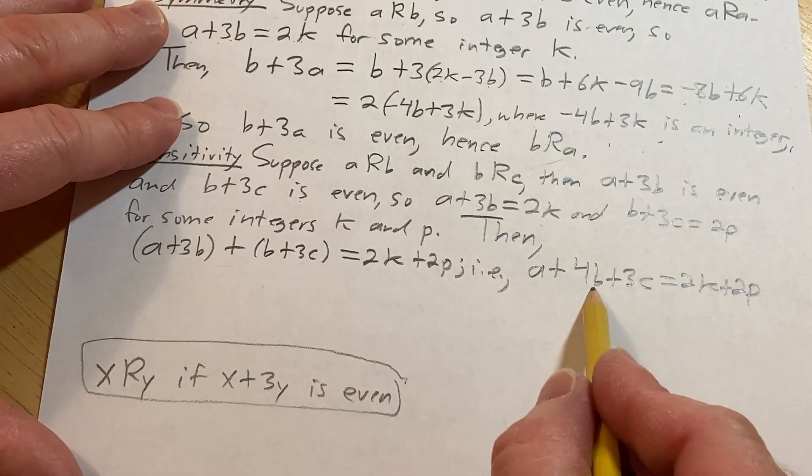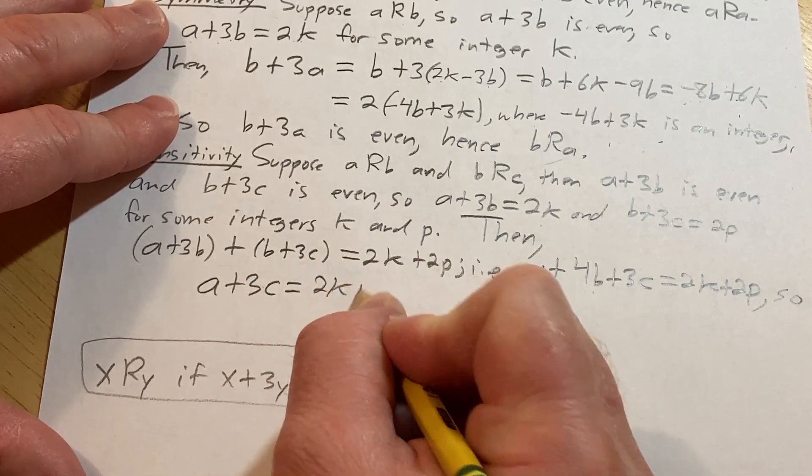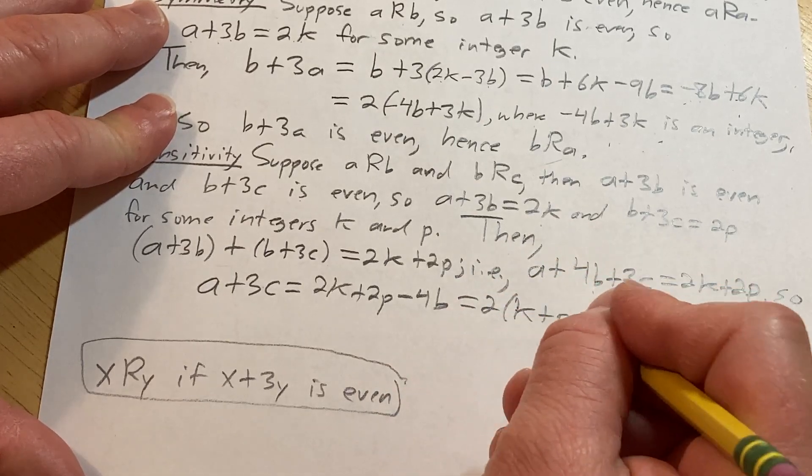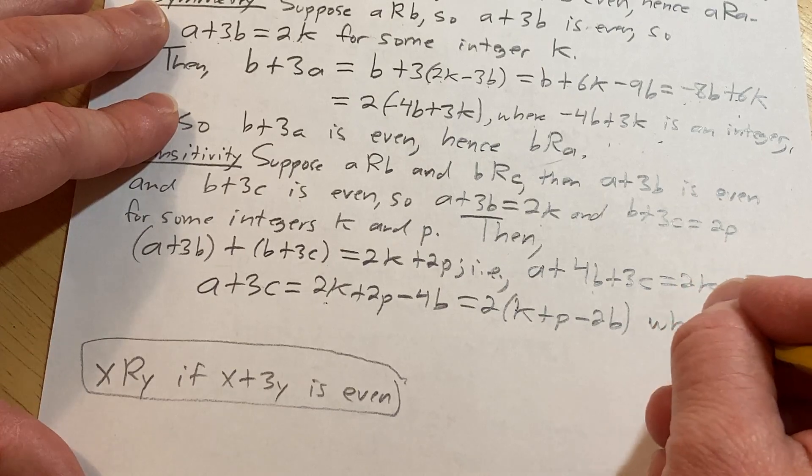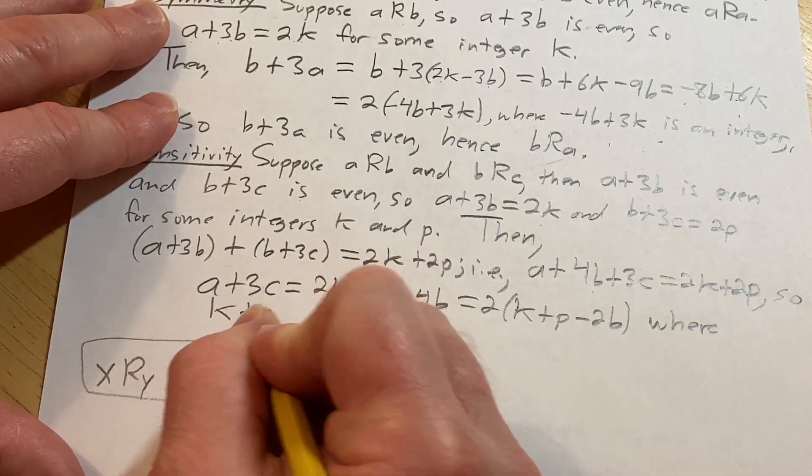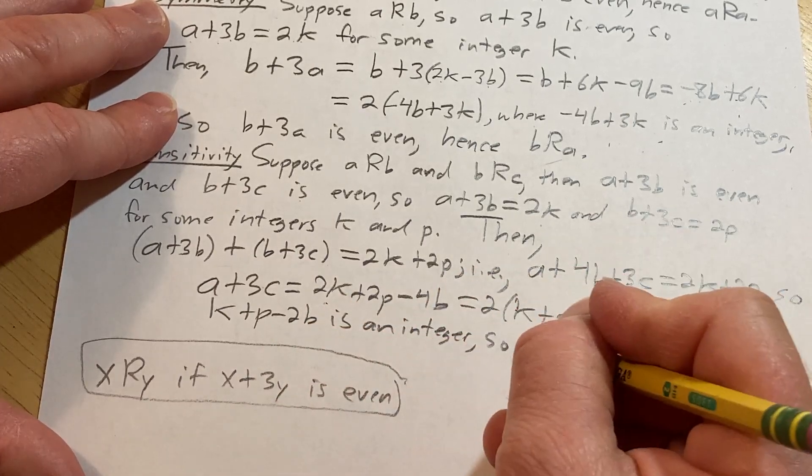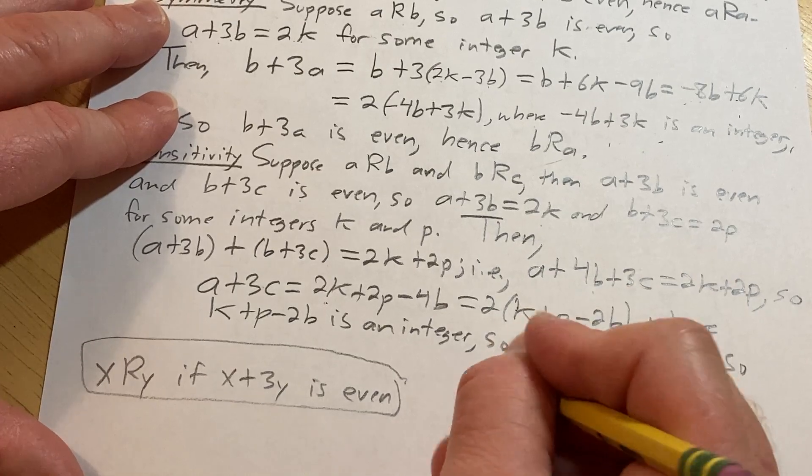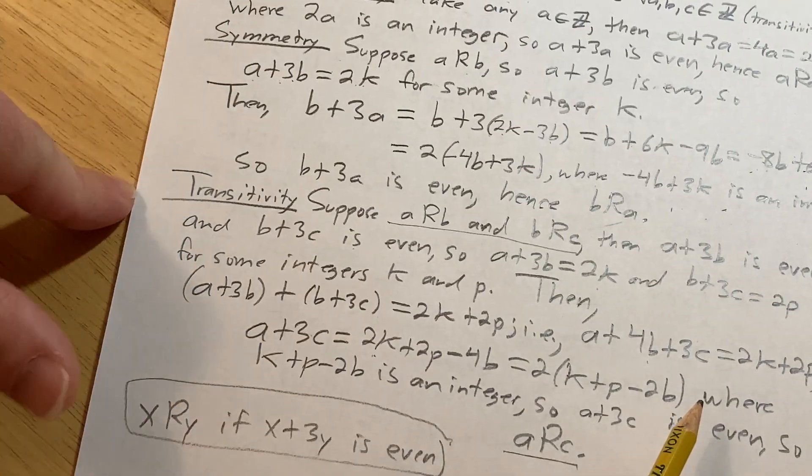Now we can subtract the 4b. So a plus 3c equals 2k plus 2p minus 4b. You can pull out a 2: 2 times (k plus p minus 2b), where k plus p minus 2b is an integer. So a plus 3c is even. So a is related to c. We started with a related to b and b related to c and showed that a was related to c—that shows transitivity. Therefore we've shown that it is reflexive, symmetric, and transitive, therefore it's an equivalence relation.